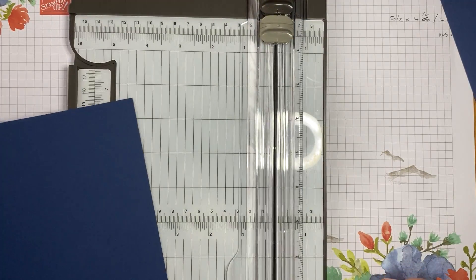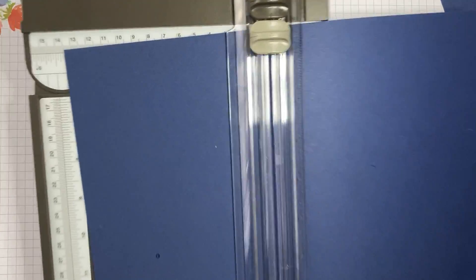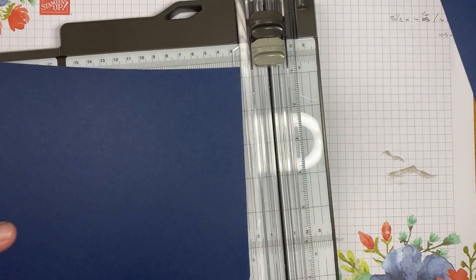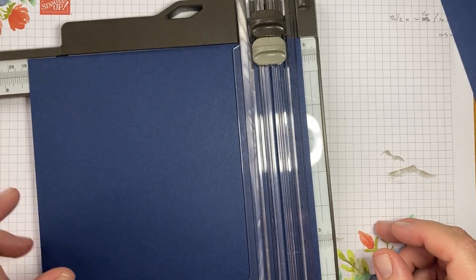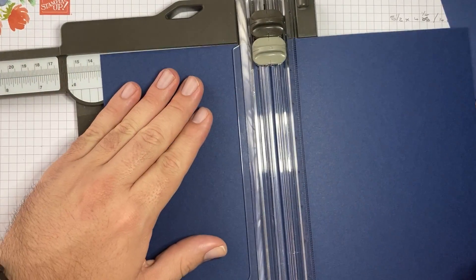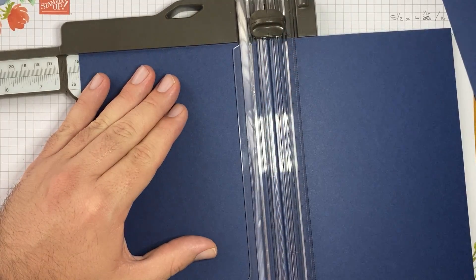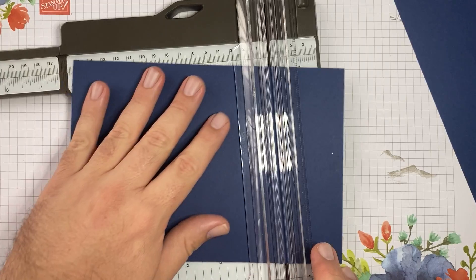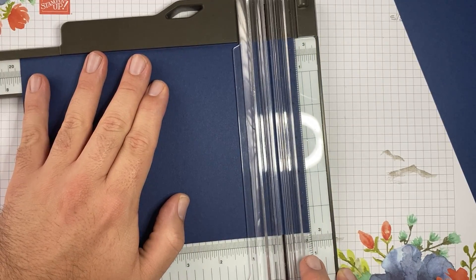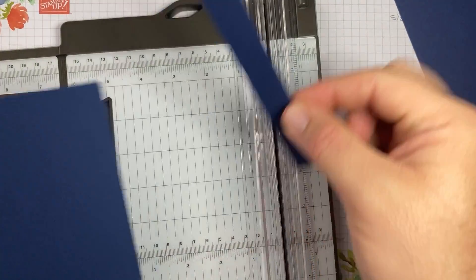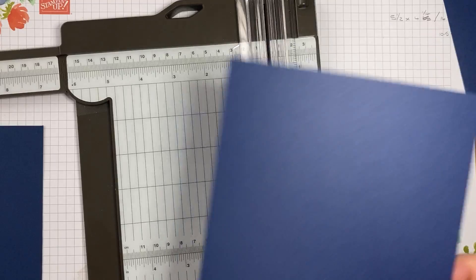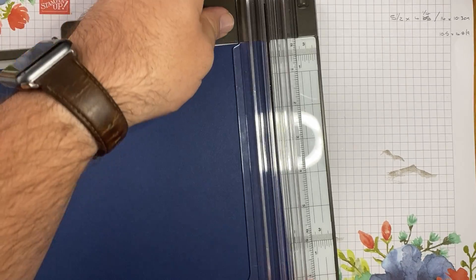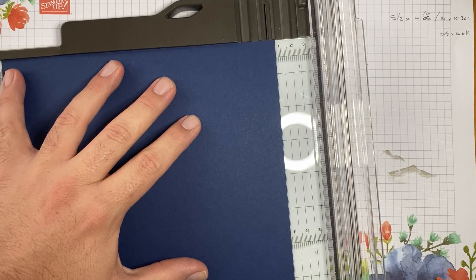I am going to cut my card base down to seven and a half by five and three quarters. So you'll be able to get two bases from this by seven and a half.